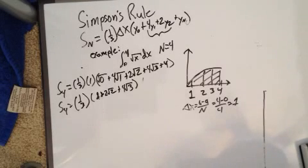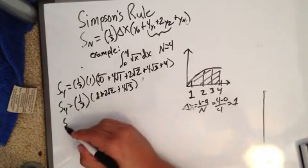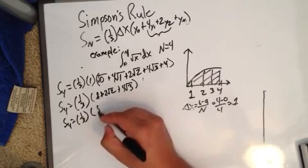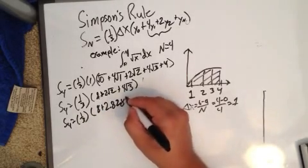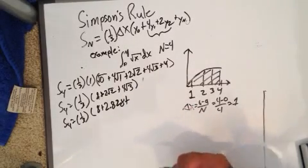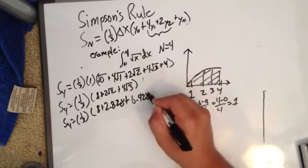So we'll go 2 times the square root of 2, which I'm pretty sure is just... No, it's just 2.8. So S_4 is equal to 1/3 times 8 plus 2.828 plus 4 times the square root of 3, which is 6.928.